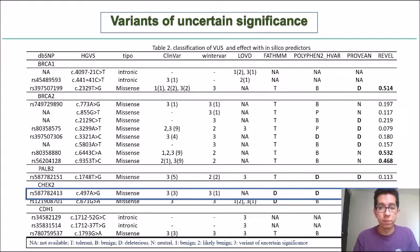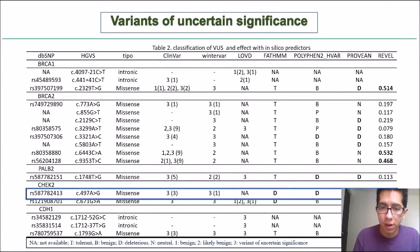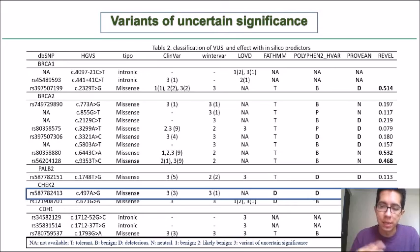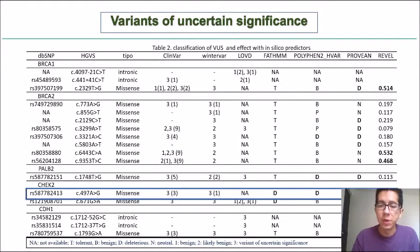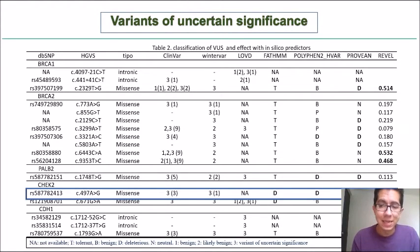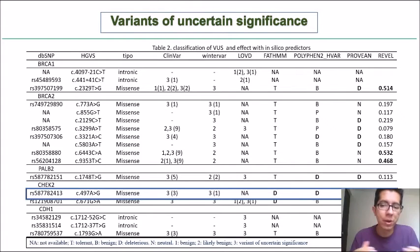We also found 17 mutations of uncertain significance and performed in silico prediction to assess whether they tend to be pathogenic or benign, using predictors such as SIFT, PolyPhen, HVAR, Provean, and the meta-predictor REVEL. We found that one variant in the CHECK2 gene shows strong in silico pathogenicity, and we should perform in vitro studies to determine if it can be reclassified.